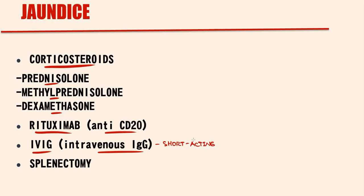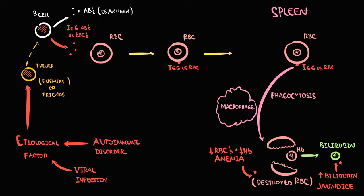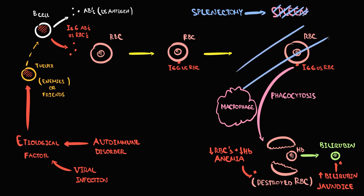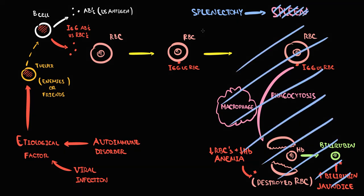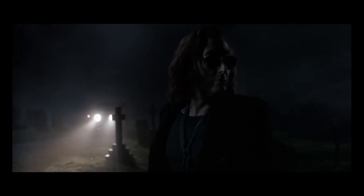The rescue option is splenectomy. As we discussed, the spleen is the home of macrophages and thereby the site of red blood cell destruction. By performing splenectomy, we eliminate the site of red blood cell destruction, and obviously with decreasing red blood cell destruction, the red blood cell count will increase.